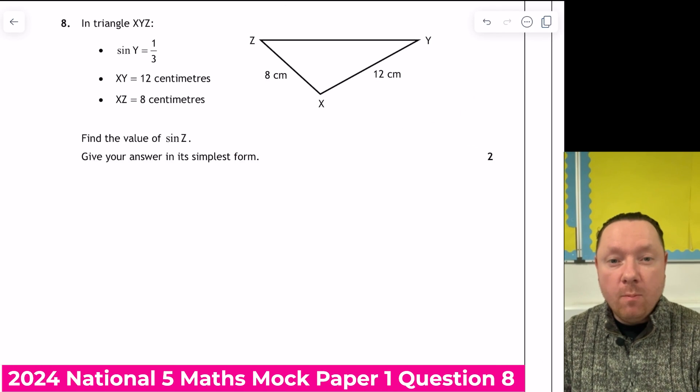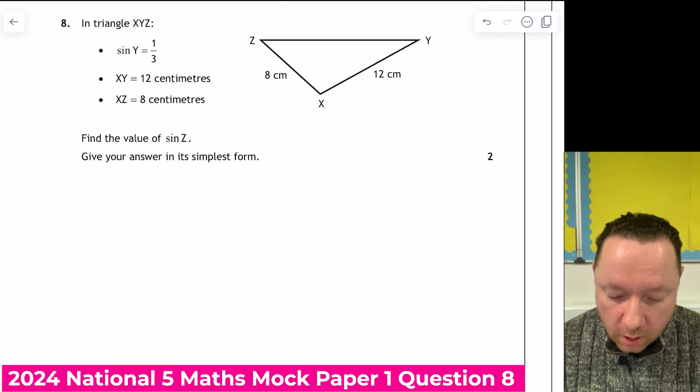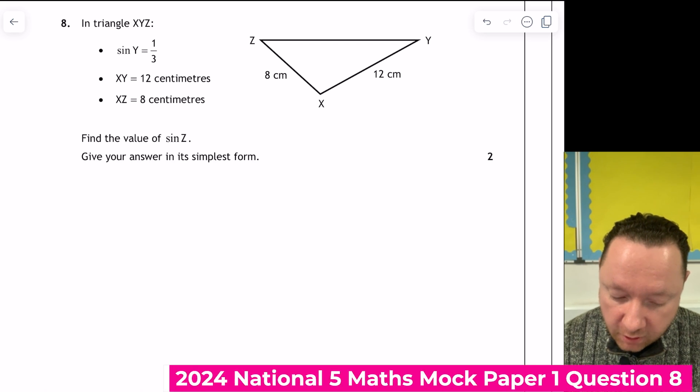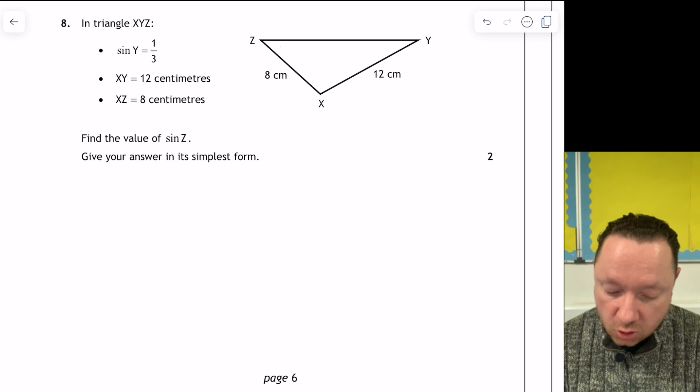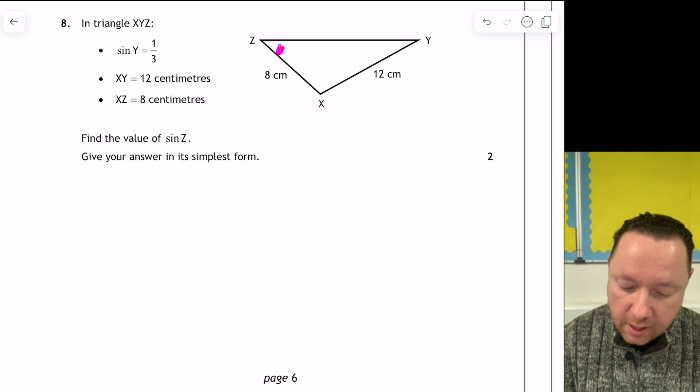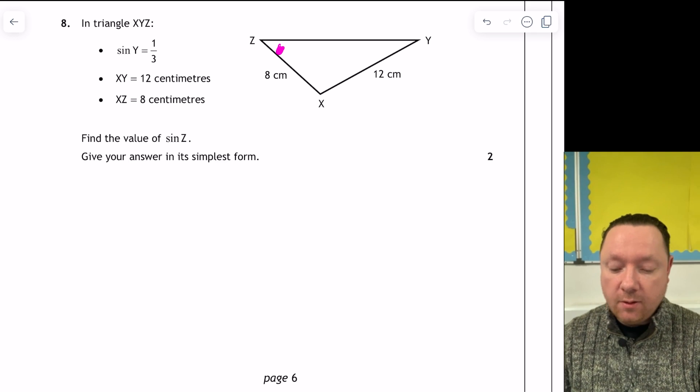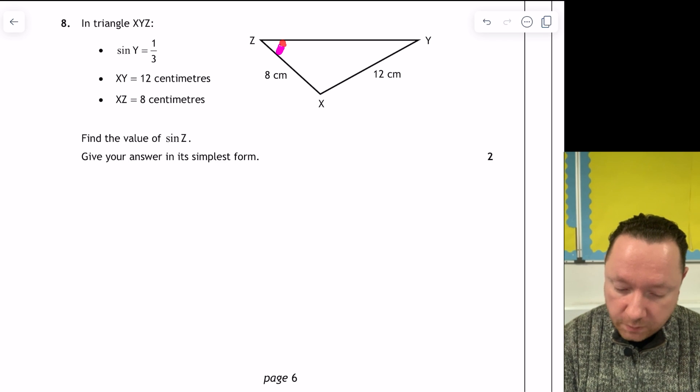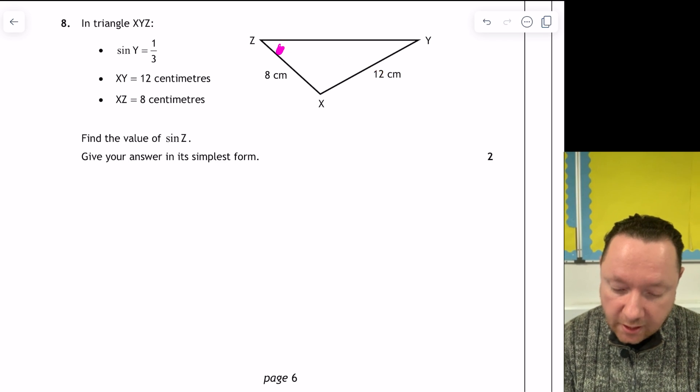It's Green National 5 Maths 2024 mock paper 1. So we've got question 8. In the triangle XYZ, sine y is a third. XY is 12. And XZ is 8. As shown, find the value of sine z. So we're looking for this one. Not z, but sine z. And why is that? Because it's a non-calculator paper. So this is the sine rule, because I've got opposite, opposite.